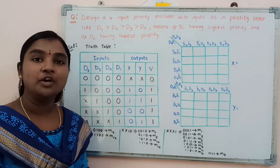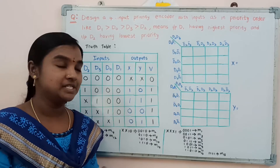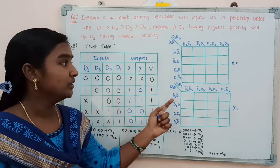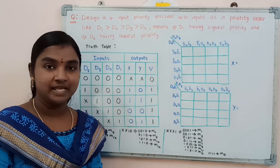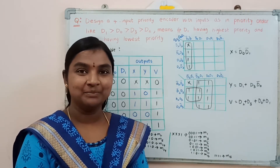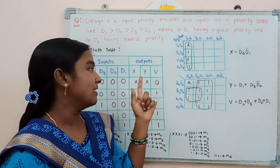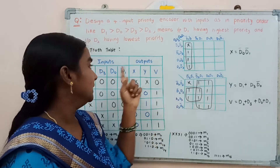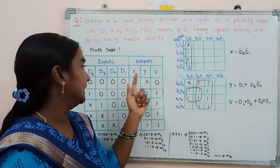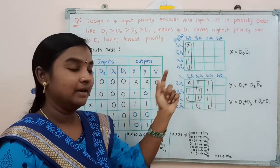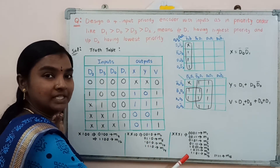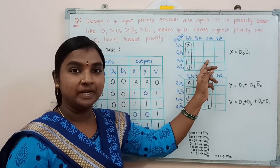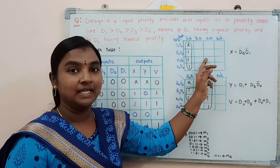To design this 4-input priority encoder, we need to find the boolean expressions for output x, output y, and v. Using 4-variable K-maps, we can find these boolean expressions. For the K-map, d2 and d3 variables are on the row side, and d0 and d1 variables are on the column side. By assigning the minterms in the K-map with respect to those minterms, we assign 1s.